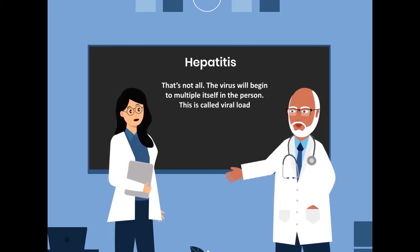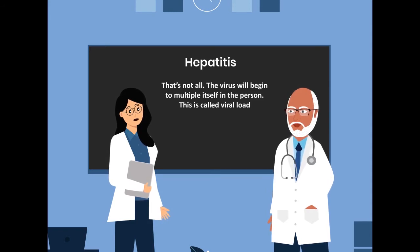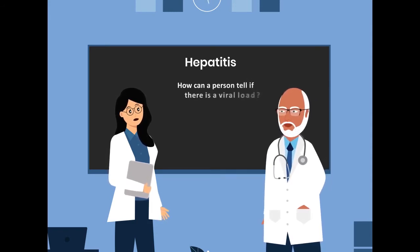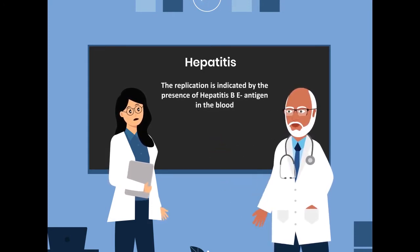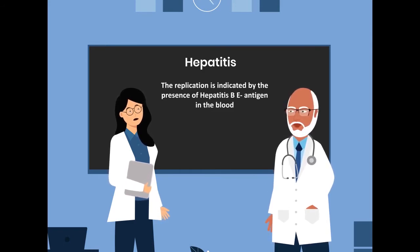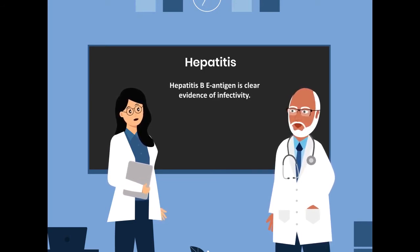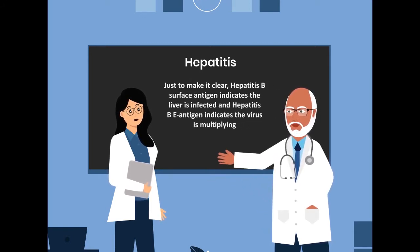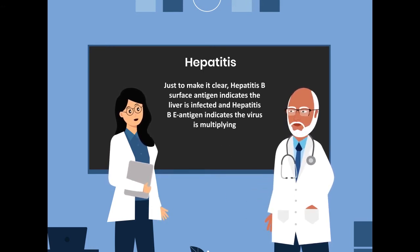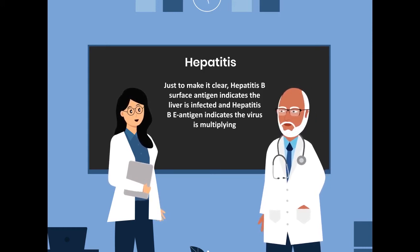That's not all. The virus will begin to multiply itself in the person. This is called viral load. How can a person tell if there is a viral load? The replication is indicated by the presence of Hepatitis B E antigen in the blood. Hepatitis B E antigen is clear evidence of infectivity. Hepatitis B surface antigen indicates the liver is infected, and Hepatitis B E antigen indicates the virus is multiplying.